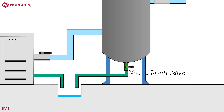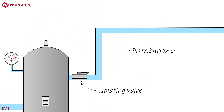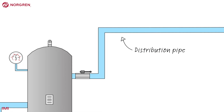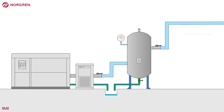The drain valve allows this drain to be switched on and off. The isolating valve allows the supply of air to be disconnected from the ring main. The distribution pipe allows all the energy stored in the air to circulate through the system.